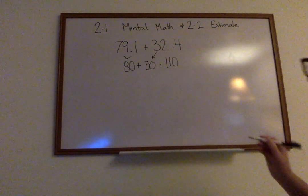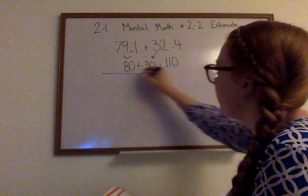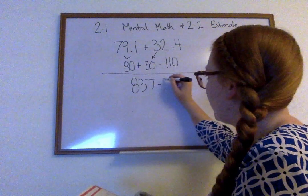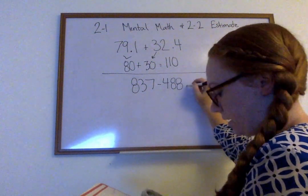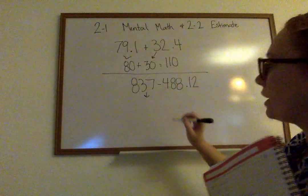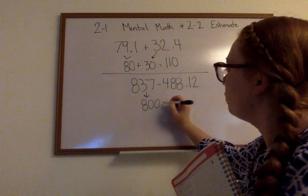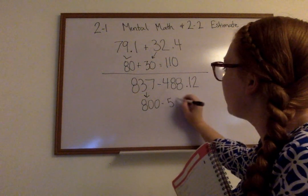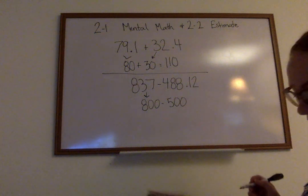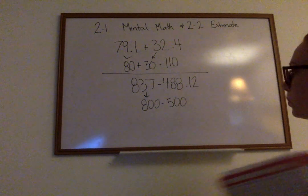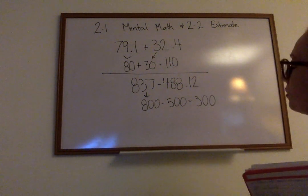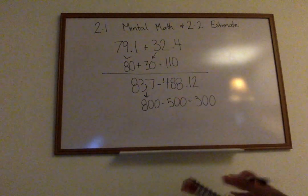Let's look at another one. If I have 837 minus 488.12. My 837 I'm going to round it to just 800. My 488 is going to get rounded up to 500. And then this one, if I'm subtracting, my answer is going to be 300. Let's do some more.